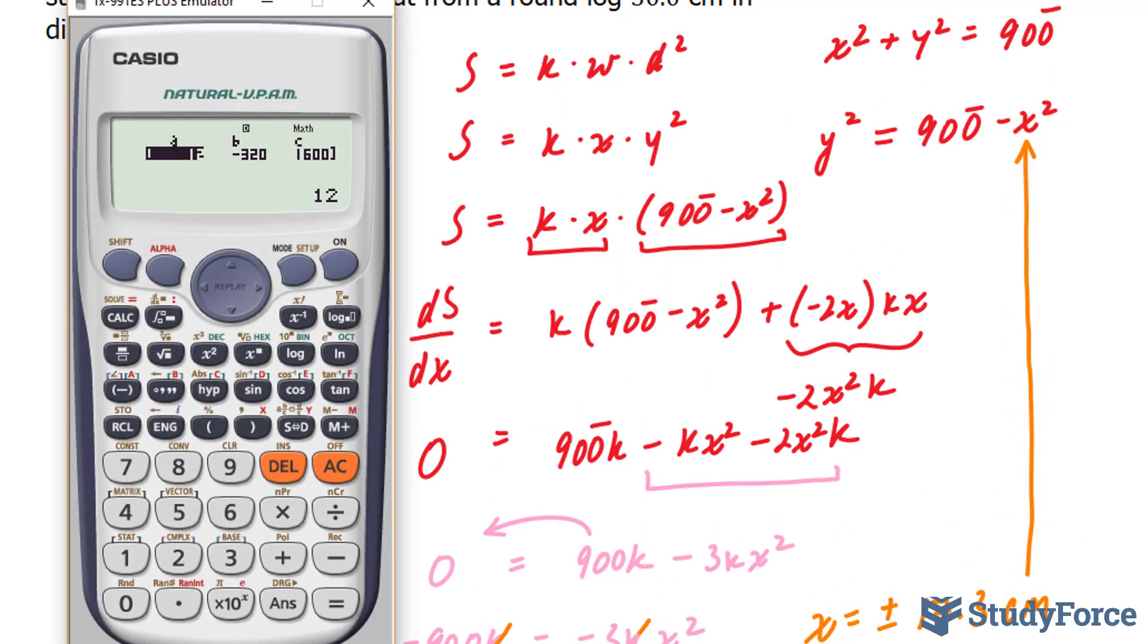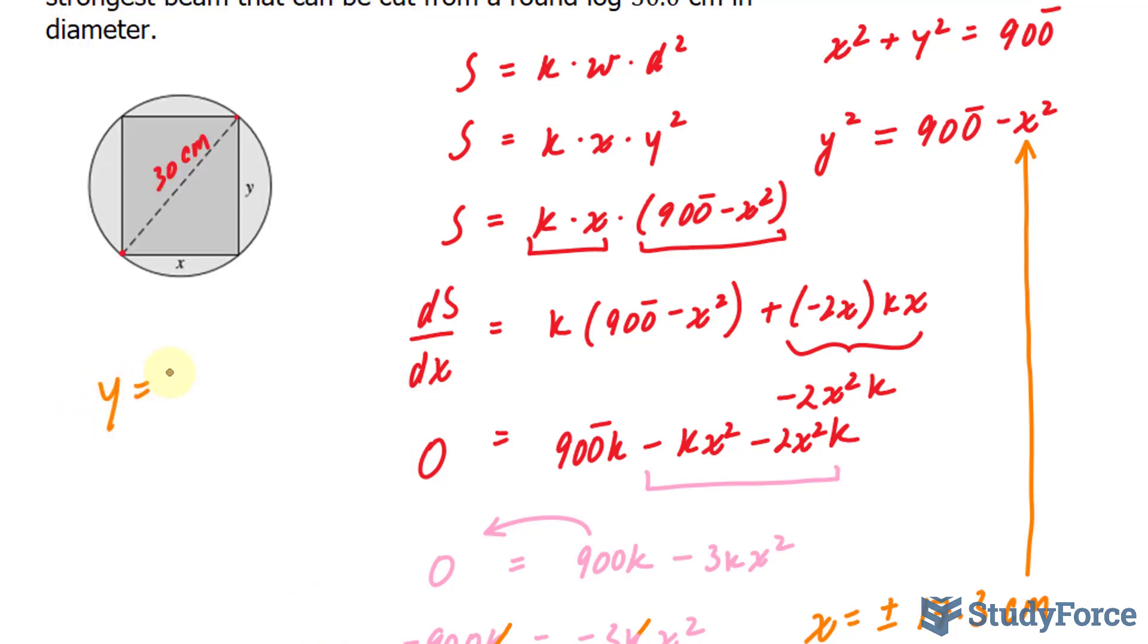Using my calculator, 900 minus 17.3 to the power of 2, square root both sides. That gives us 24.5 as my depth. So y is equal to 24.5 centimeters.